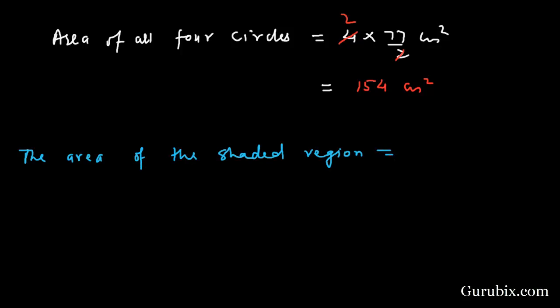The area of the shaded region will be 196 minus 154 centimeters squared, this means 42 centimeters squared. So this is the solution of the question.